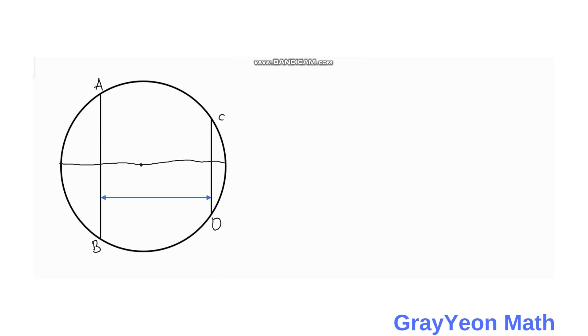If it bisects the chord then this would be 10 and this would be 10 and this would be 4 and 4. And if you draw a radius from the center to A you have the radius, and another line from C to the center of the circle you have R also.